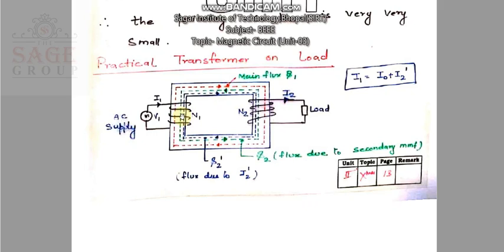Due to current I1, a flux phi is produced in the primary coil, and some part of this flux links with the core of the transformer. The flux flowing in the core is phi 1. This phi 1 links with the secondary winding coil due to the mutual induction principle. Since the secondary winding has a closed path connected with a load, an EMF is induced in the secondary terminal, and current I2 starts flowing.